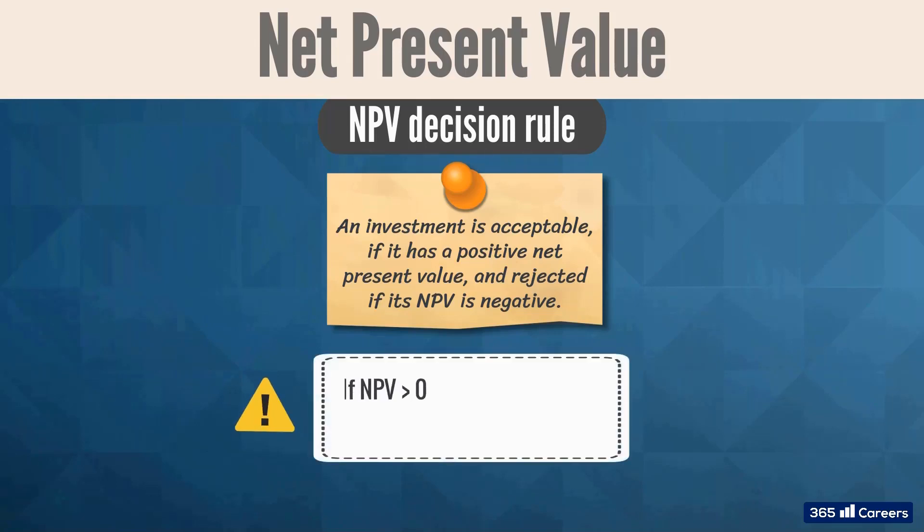In other words, if NPV is higher than zero, we invest in the project. If NPV is lower than zero, we do not invest in the project.